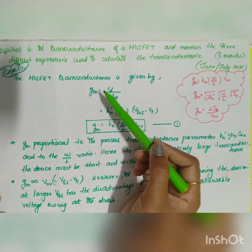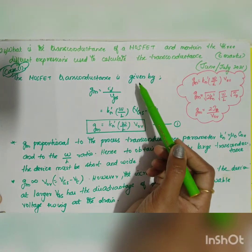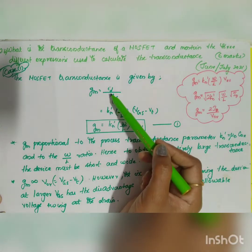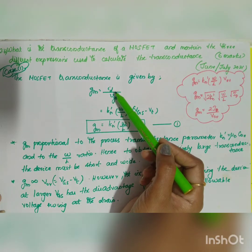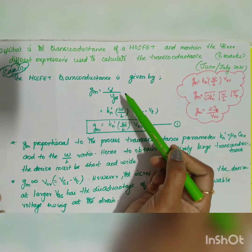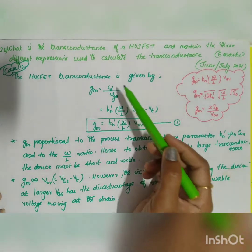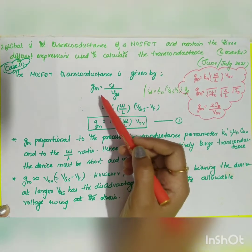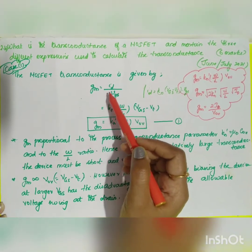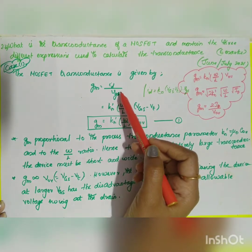The MOSFET transconductance is defined as the drain current divided by the gate-to-source voltage. So what is GM? GM is equal to ID divided by VGS.